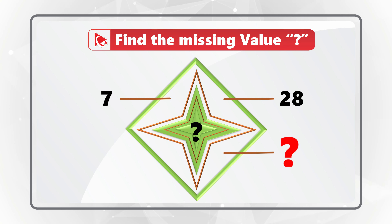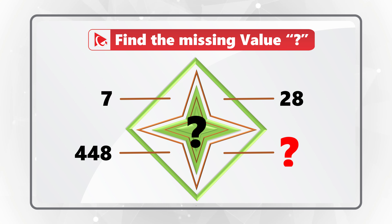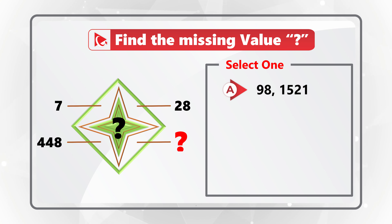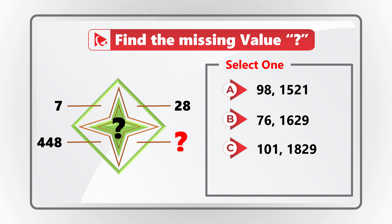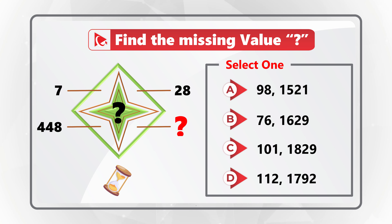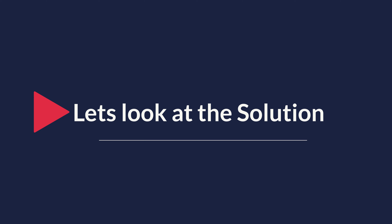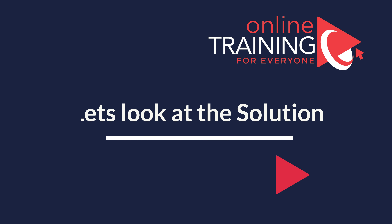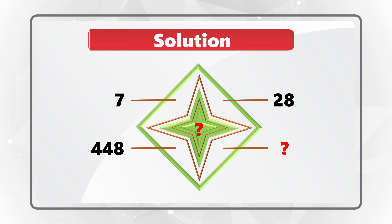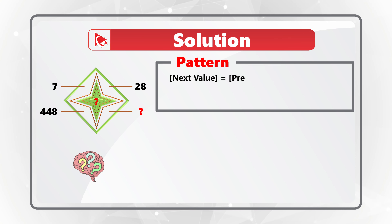Here's an amazing question where you need to find missing values represented by question marks located on the outside and inside of a star hosted inside a diamond. Numbers around the figure: 7 at 11 o'clock, 28 at 1 o'clock, a missing number at 5 o'clock, and 448 at 8 o'clock. There's also a missing number in the center. Choices: A) 98 and 1521, B) 76 and 1629, C) 101 and 1829, D) 112 and 1792.